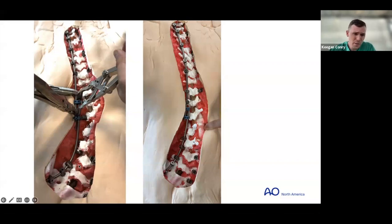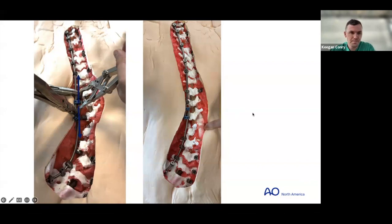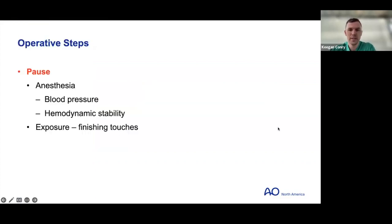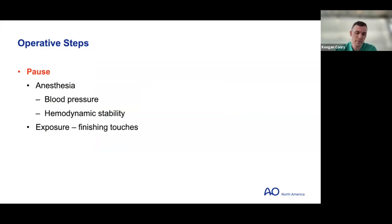Doing initial correction before the osteotomy provides stability while freeing up the spine from the other side, lets you see how flexible the spine will get, and makes decompression easier as you stretch things apart. We work back and forth: distract for length, use a clip to pull the next tulip toward the rod, back and forth until you've maxed out correction on that side. Before the osteotomy, take a pause, ask anesthesia about blood pressure and status. Don't get into the osteotomy half-engaged — be completely ready, confirm full visualization, then it's go time.